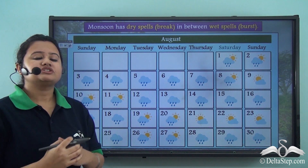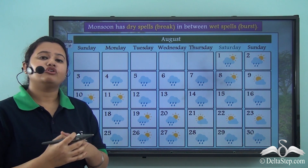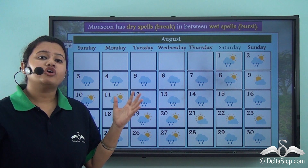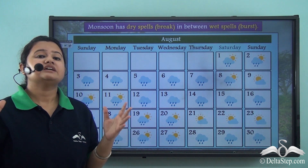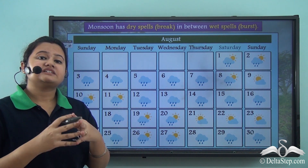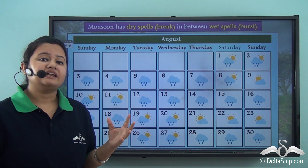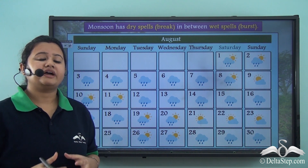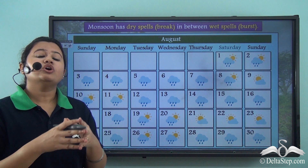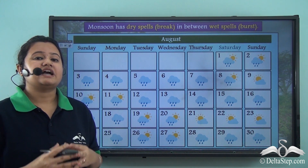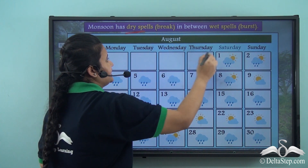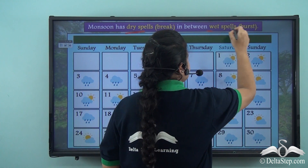Another important characteristic of Indian monsoon is that it does not rain continuously for all the days during monsoon season. Rather it rains for some days and then it is followed by a period of dry spell. So rainfall occurs in India at intervals of dry spells in between wet spells.